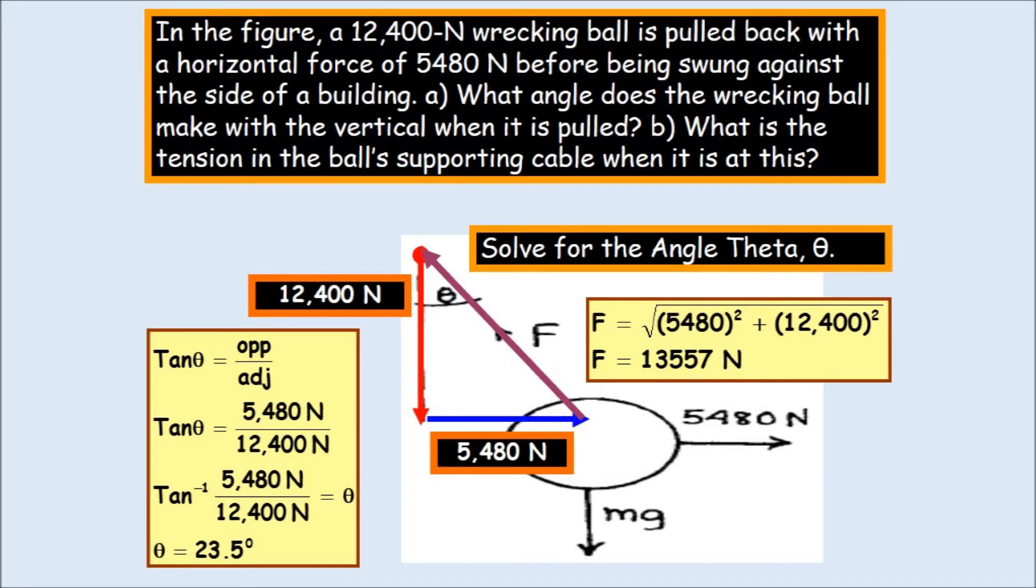In the figure, a 12,400 Newton wrecking ball is pulled back with a horizontal force of 5,480 Newtons before being swung against the side of a building. What angle does the wrecking ball make with the vertical when it is pulled? And what is the tension in the ball's supporting cable when it is pulled at this angle? So, very confusing problem for my students. Let's take it one step at a time.